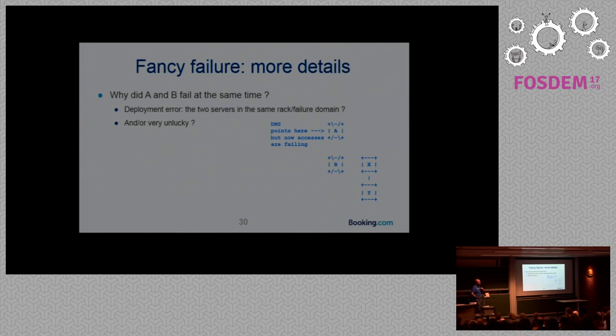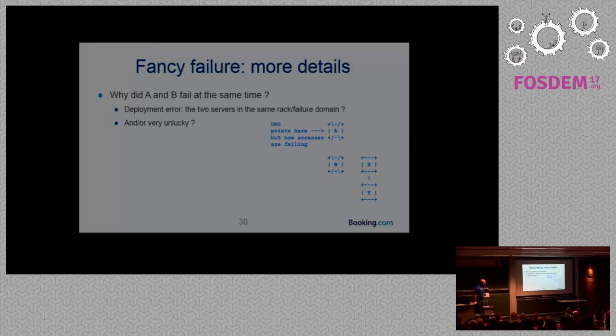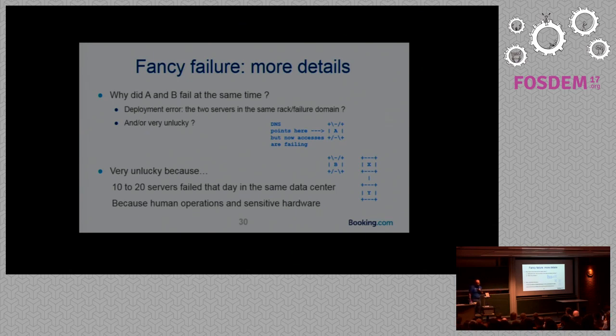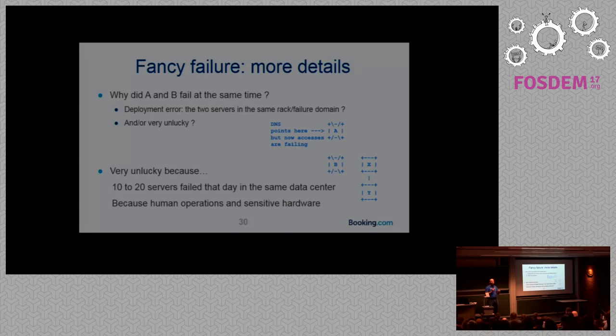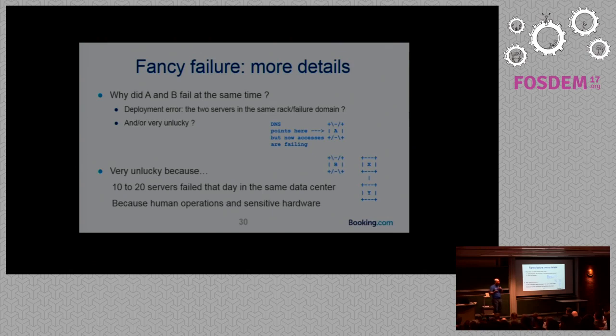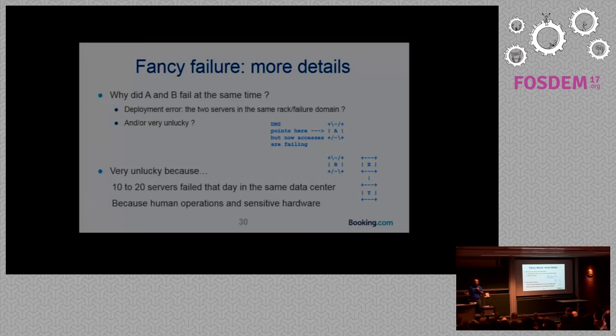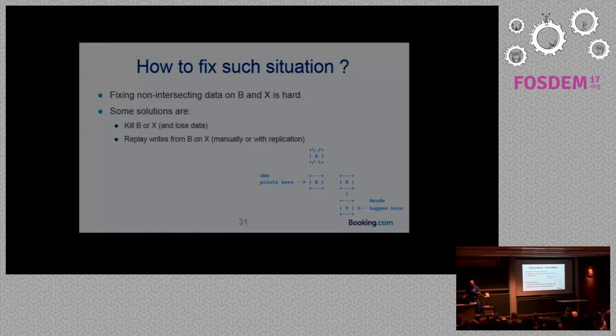So let's talk about our fancy failure. Two servers failing at the same time is very unlikely. So was it a deployment error, A and B in the same rack? Or were we very unlucky? And actually it's both. But on that day, in about less than two hours, 10 to 20 servers failed at the same time in the data center. And so this is because there were human operations in the data center, people were racking new servers. And because of very sensitive hardware, there was a low probability when you were racking a new server in the same rack that it was shutting down another server. So my point here is double failure happens.